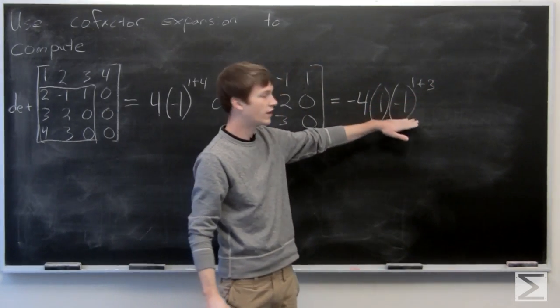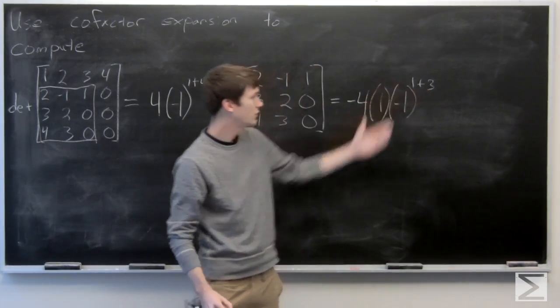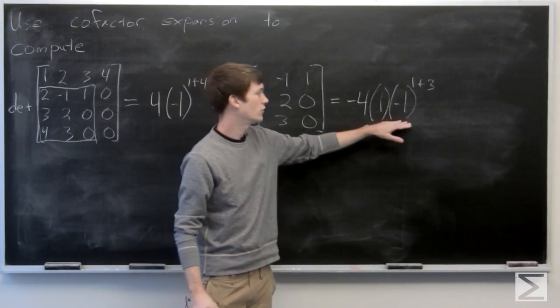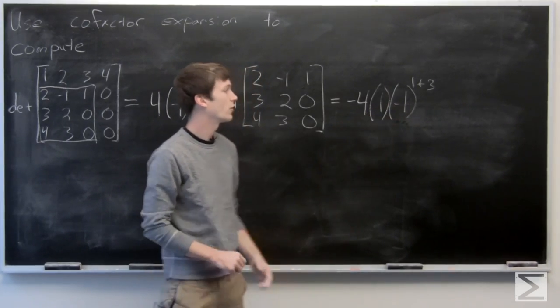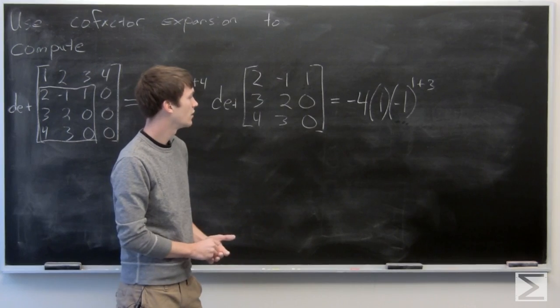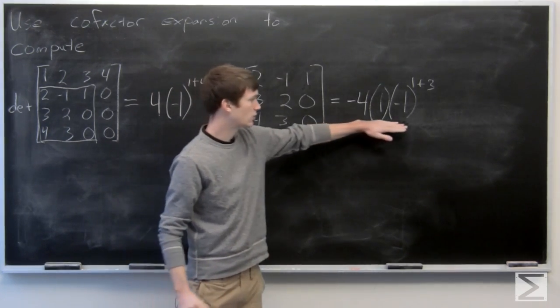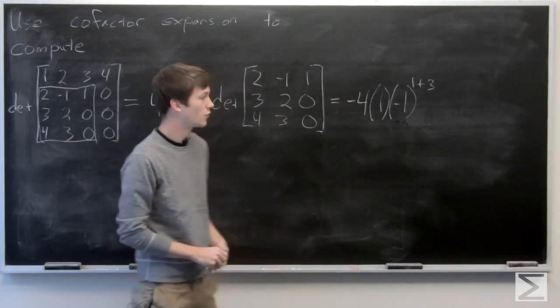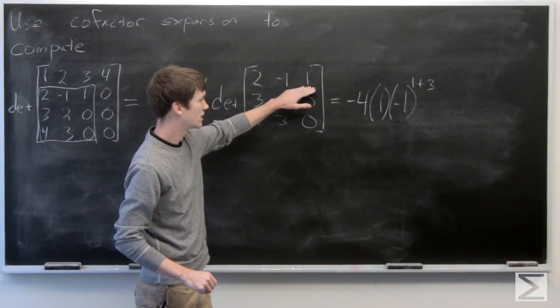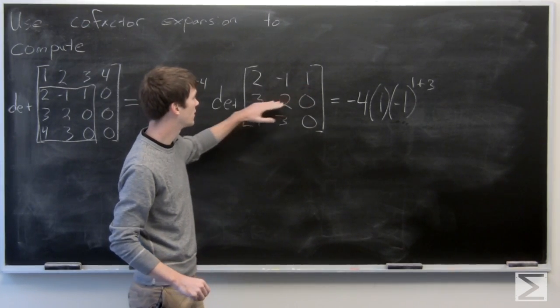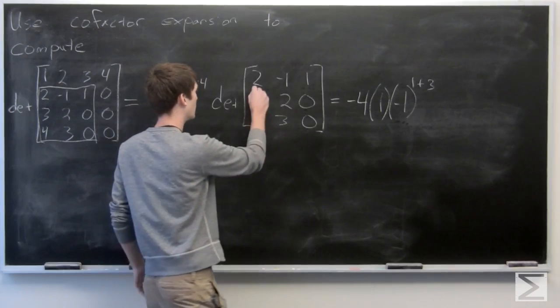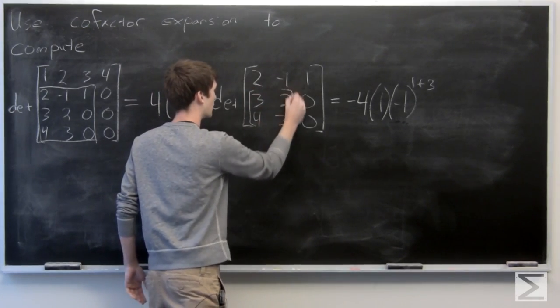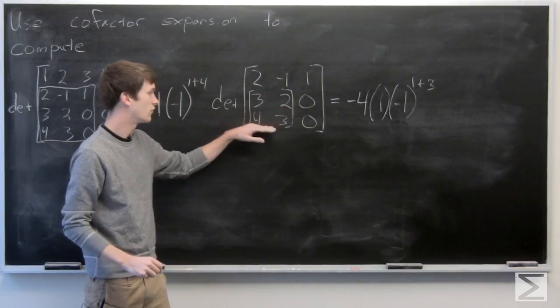So we have negative 1 to the power of 1 plus 3, which is 4. Negative 1 to the fourth power is positive 1. So this whole term will simplify to negative 4. And then we're going to take this 1 times the determinant of our matrix here: 3, 2, 4, 3.